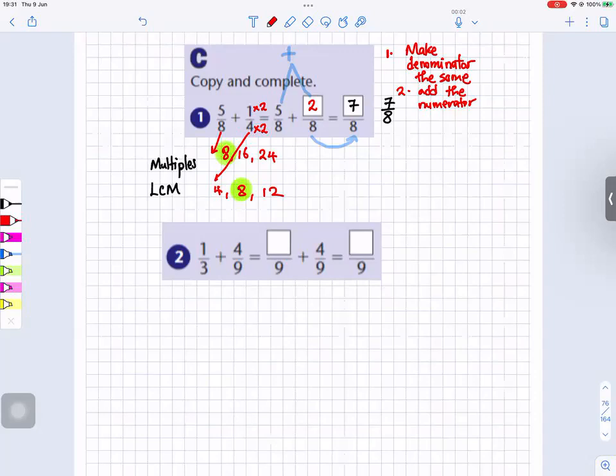What are the multiples of three? Three, six, nine, twelve. And the multiples of nine?